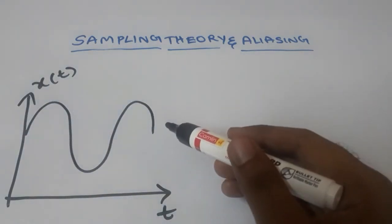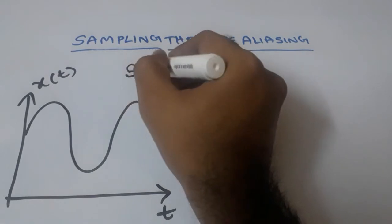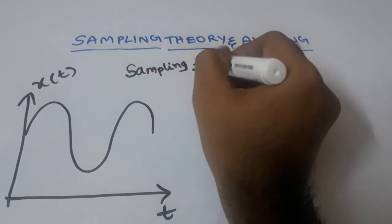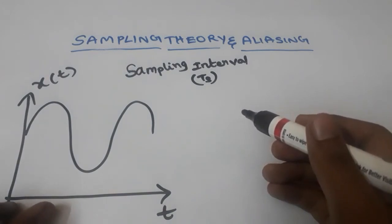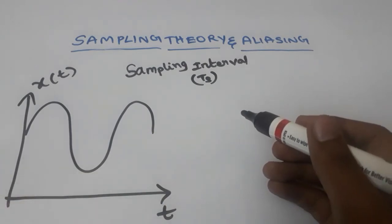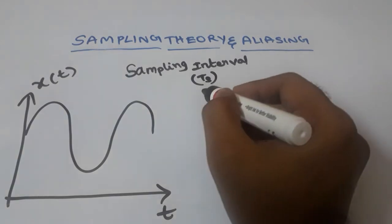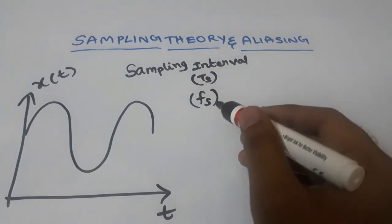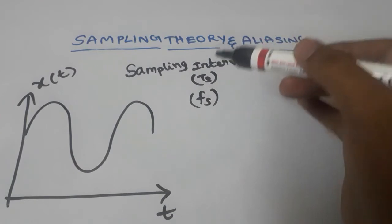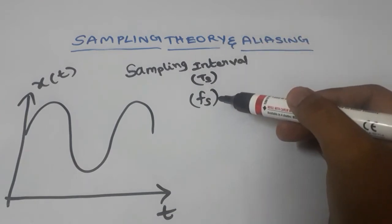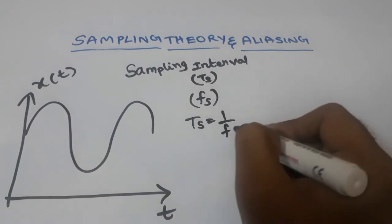Now we will fix the sampling parameters. The first parameter is the sampling time interval, or sampling interval, denoted by T subscript S. The sampling time interval is the time gap between consecutive samples. The second parameter is the sampling rate or sampling frequency, denoted by F subscript S. The sampling interval T_S is the reciprocal of the sampling rate F_S.